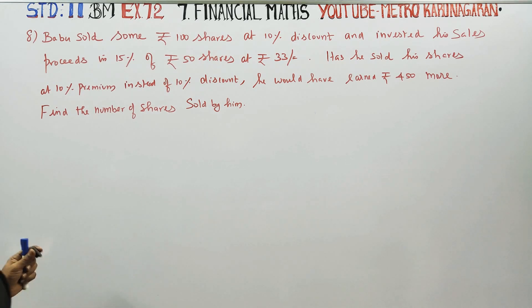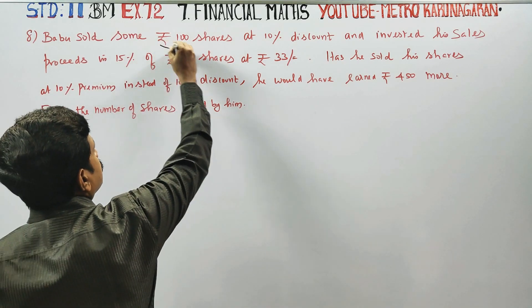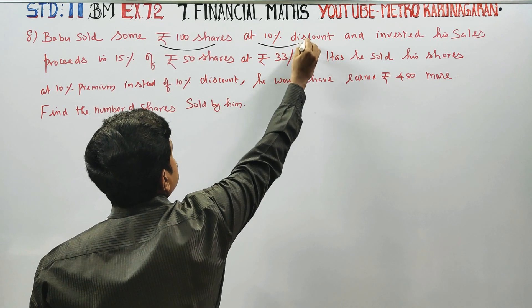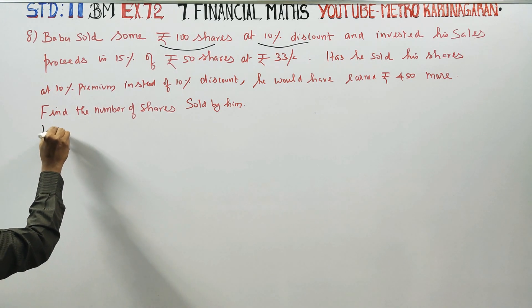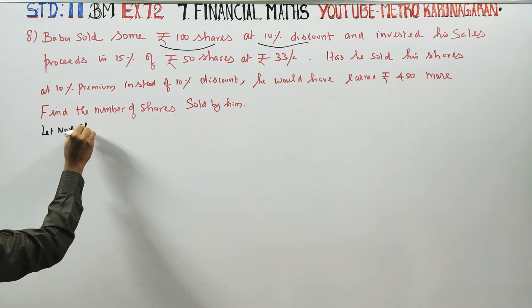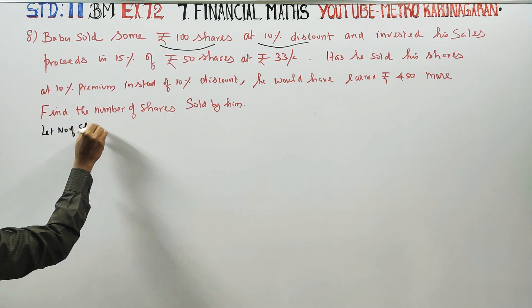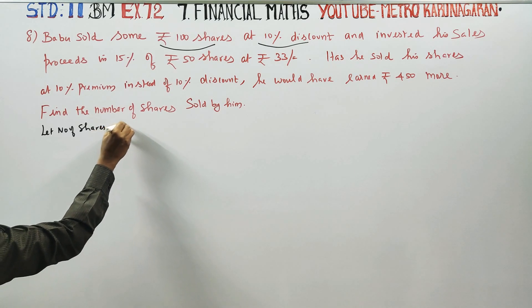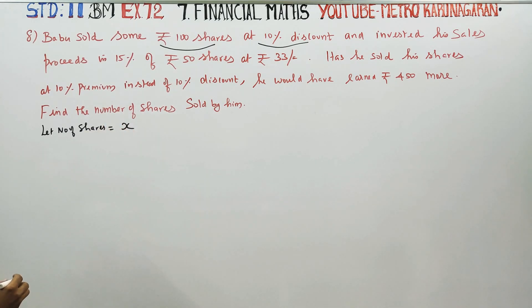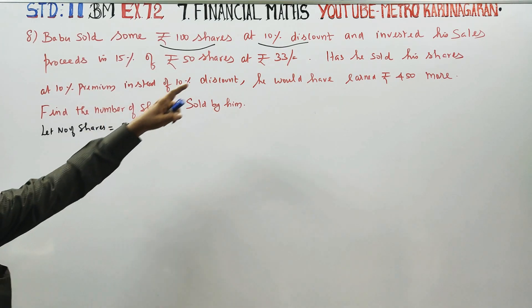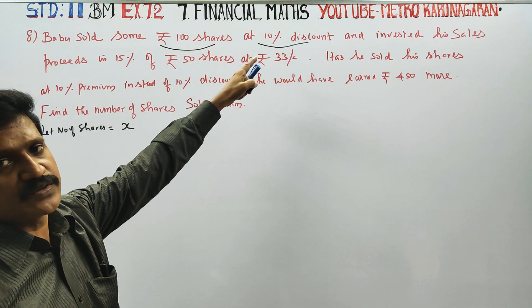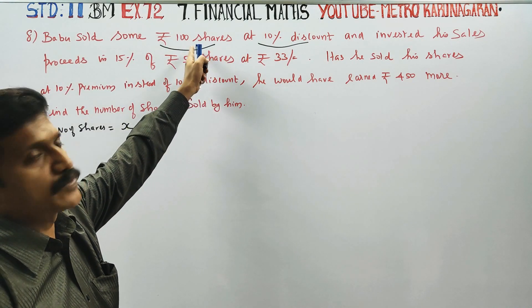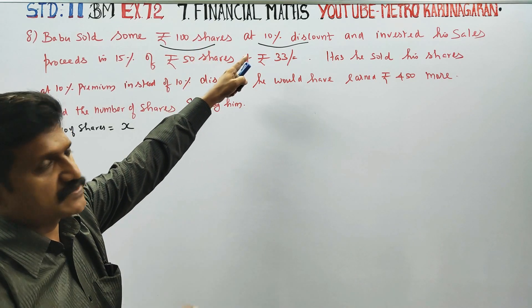The face value is Rs.100 and the discount is 10%. Let the number of shares be x. We need to find how many shares there are.